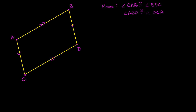What I want to do in this video is prove that the opposite angles of a parallelogram are congruent. So for example, we want to prove that angle CAB is congruent to angle BDC — that angle is equal to that angle — and that angle ABD is congruent to angle DCA, which is this angle over here.